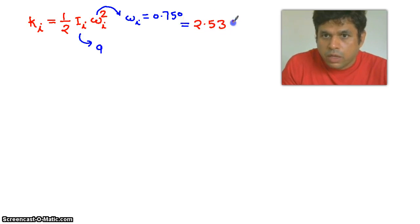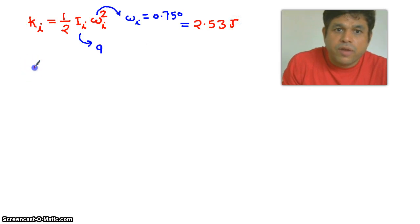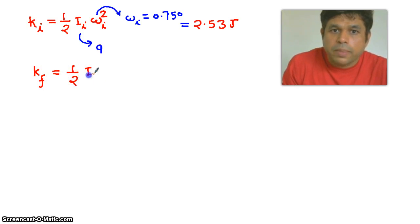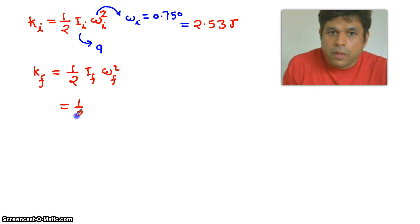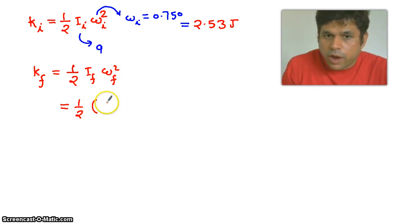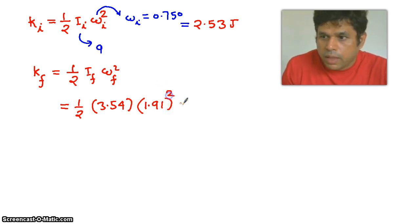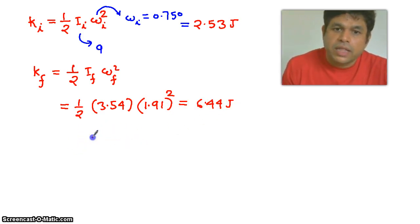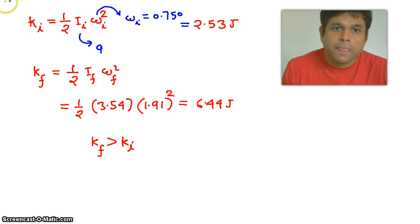Similarly, we find the final kinetic energy: ½ × I_final × ω_final². Substituting I_final = 3.54 kg·m² and ω_final = 1.91 rad/s squared, the final kinetic energy becomes 6.44 joules. We can observe that the final kinetic energy is more than the initial kinetic energy.